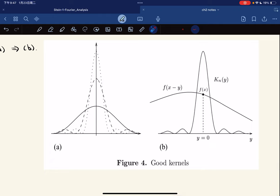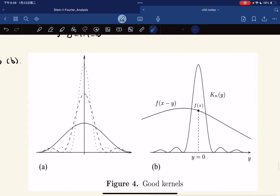So here's some pictures of good kernels. As n increases, these parts get to zero. This is an example of convolution of a function with a kernel, with a good kernel.